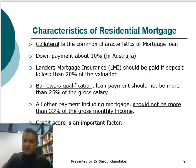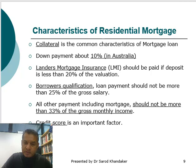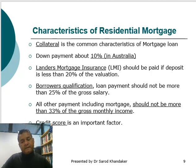Lender's mortgage insurance (LMI) is another characteristic of residential mortgage. Anyone borrowing more than 80% of the loan — or paying less than 20% deposit — must pay lender's mortgage insurance. This insurance protects the bank only against future uncertainty, not the individual borrower, although the individual has to pay it. For example, on a $500,000 house with a loan of $450,000, the LMI could be as high as around $15,000.